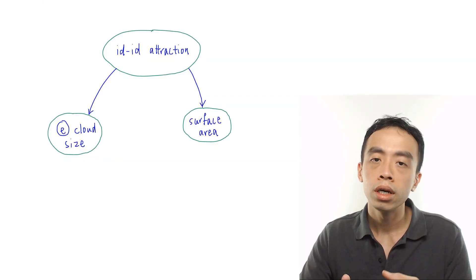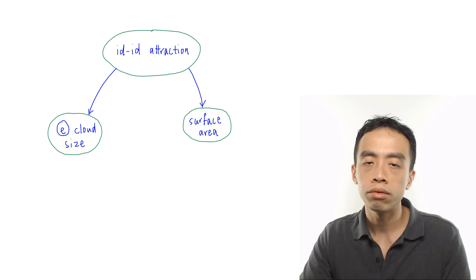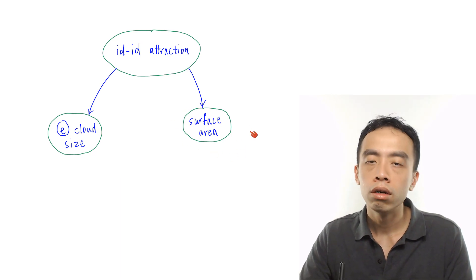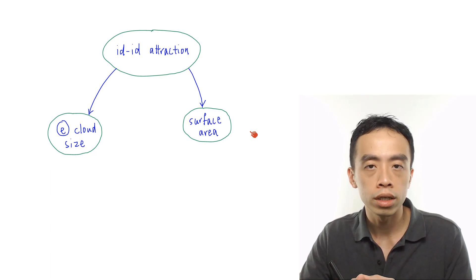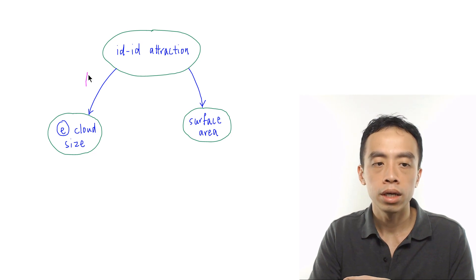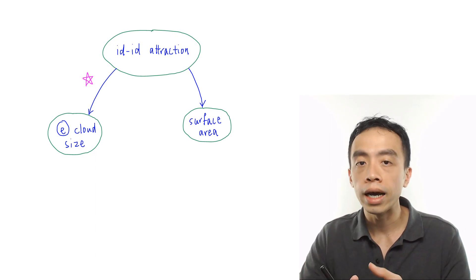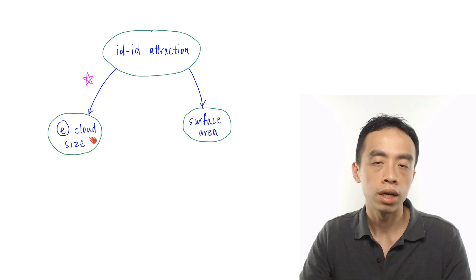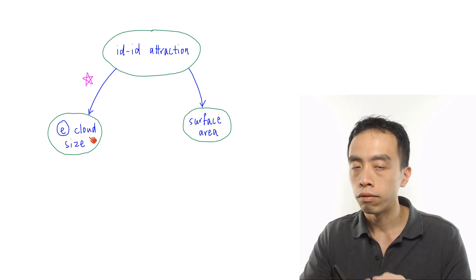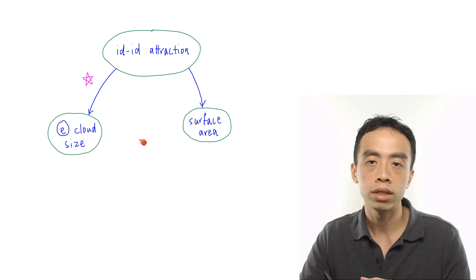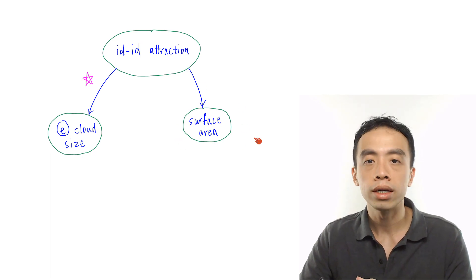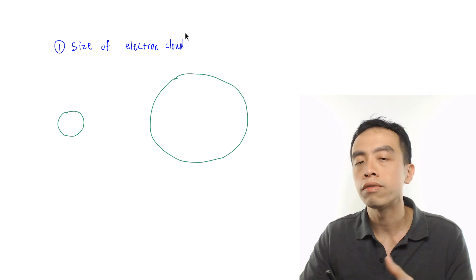The IDID attraction is affected by two things. The first factor is the size of the electron cloud. The second factor is the surface area for molecular interaction. When there are two factors, we need to know which is more important. Electron cloud size is dominant. So when comparing IDID attraction, look at electron cloud size first. If the size is the same, then consider the surface area for molecular interaction.